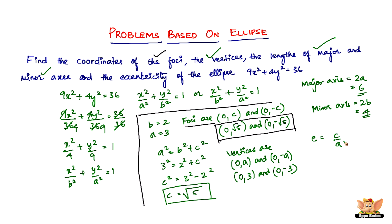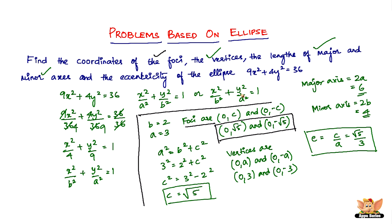Finally, the eccentricity of the ellipse is given by e = c/a. With c = √5 and a = 3, the eccentricity is √5/3. That ends this problem — we found the foci, vertices, lengths of the major and minor axes, and the eccentricity of 9x² + 4y² = 36.